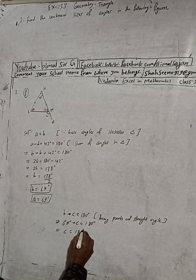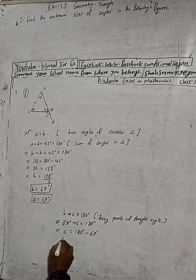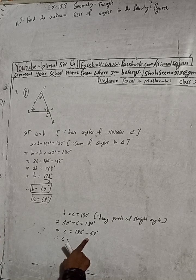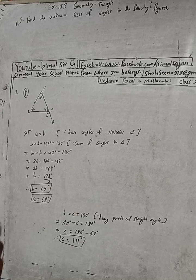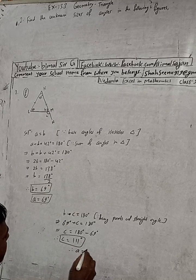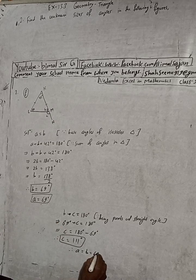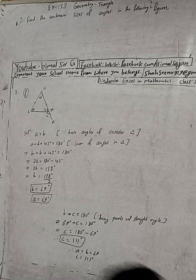So C equals 180 minus 69 degrees, therefore C equals 111 degrees. Our final answers: A is equal to B is equal to 69 degrees, and C is equal to 111 degrees. This is the solution.